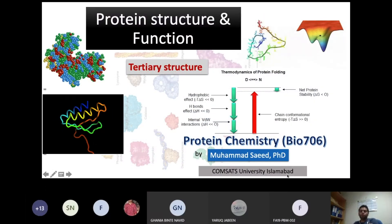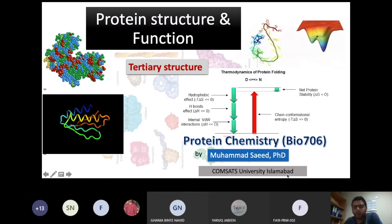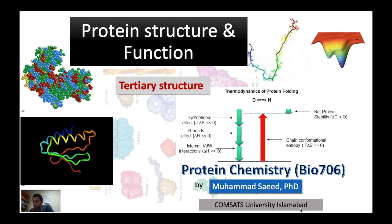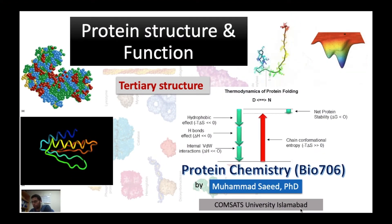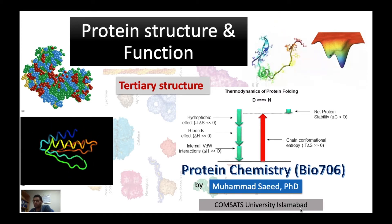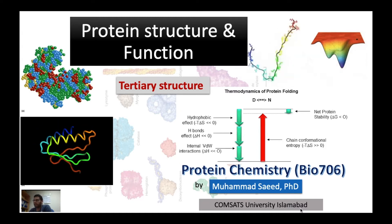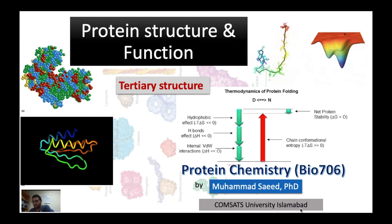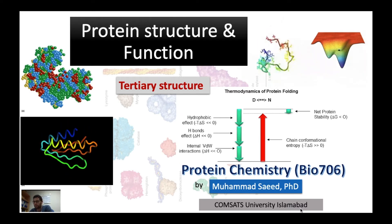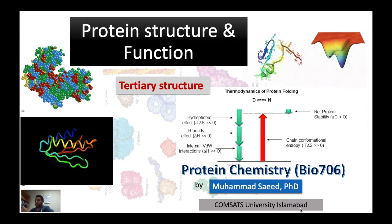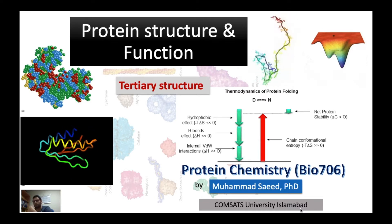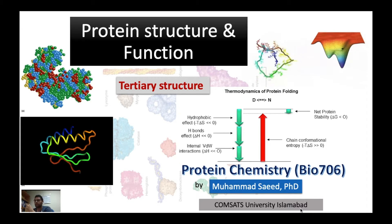Welcome students. In previous lectures we discussed primary and secondary levels of protein organization. We learned that the primary level is important not only for the functionality of the protein but also for the determination of secondary structures. The secondary protein organization involves interactions of amino acid residues present in the primary polypeptide backbone, manifesting in repeated patterns like alpha helices and beta pleated sheets.